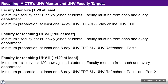The minimum preparation required for faculty mentors is at least a three-day UHV FDP, or a five-day online introductory UHV-FTP. All of you have been through either of these, so you are well equipped to mentor the students. Of course, you have to do more than just attend the course, but that is the minimum preparation.